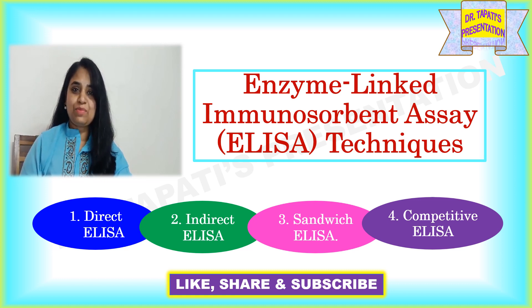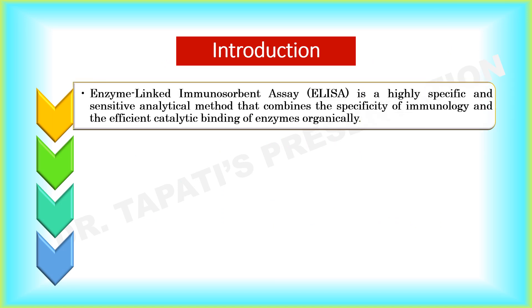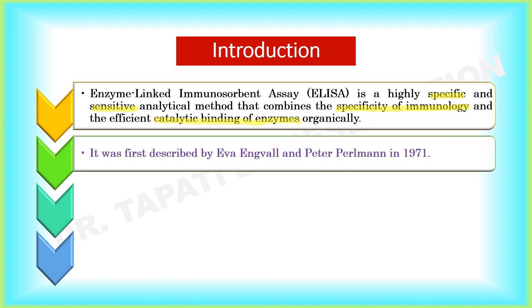Stay with me till the end of this video. I will try to explain this topic as simply as possible. ELISA is a highly specific and sensitive analytical method that combines the specificity of immunology and the efficient catalytic binding of enzymes. It was first described by Eva Ingvald and Peter Pahlman in 1971.